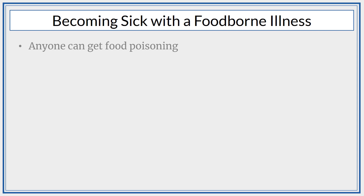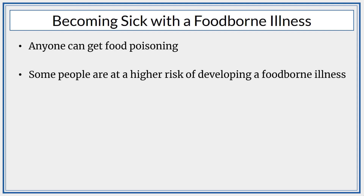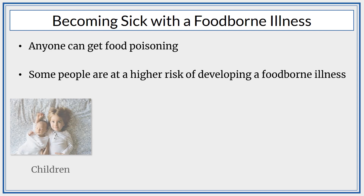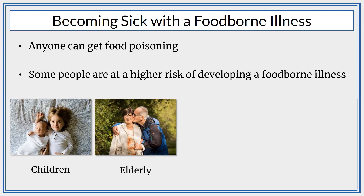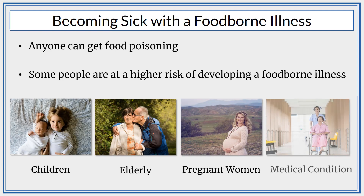Anyone can become sick with food poisoning. You probably have become ill with food poisoning at some point in your life or know someone who has been affected by it. Certain people are at higher risk of developing a foodborne illness. These people include children, the elderly, pregnant women, and those with another medical condition that weakens their immune system. There are many ways bacteria, viruses, parasites, and chemicals can get into our food.